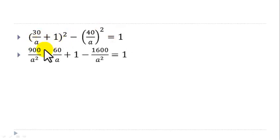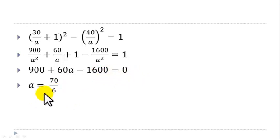Expanding, we obtain 900 over a squared plus 60 over a plus 1 minus 1600 over a squared equal to 1. Taking this one to the right, one will cancel out. Multiplying through by a squared, this will give us 900 plus 60a minus 1600 equal to 0. And solving for a, we have a equal to 70 over 6.